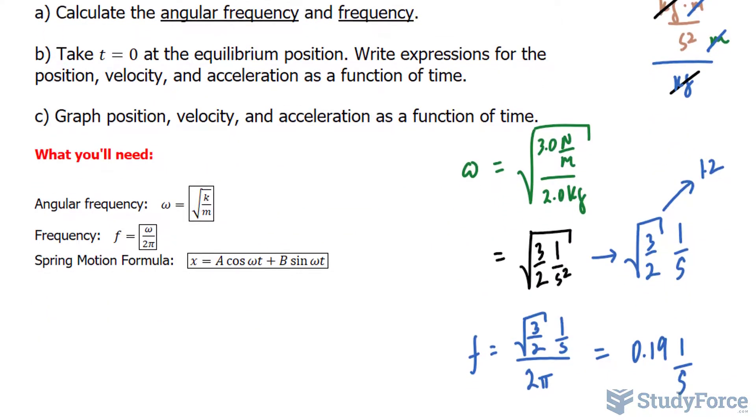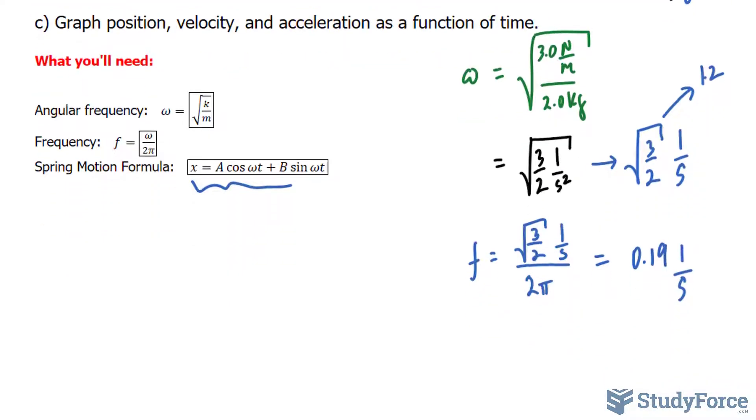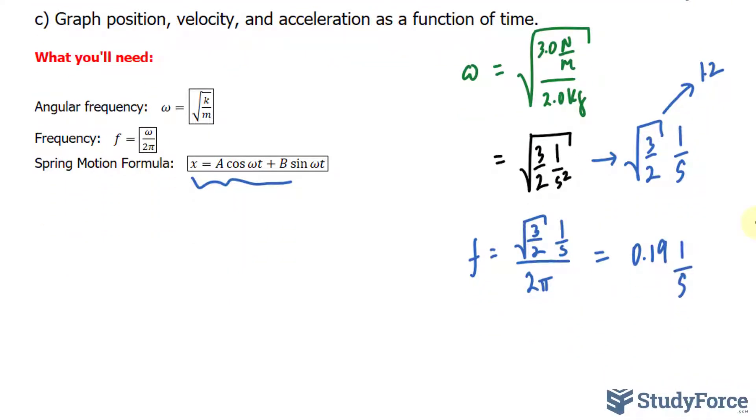To do this, we have to use the following template, where x being the position is equal to A cosine omega t plus B sine omega t. If this thing is at equilibrium where t equals 0, you have to remember what sine and cosine functions look like before starting.